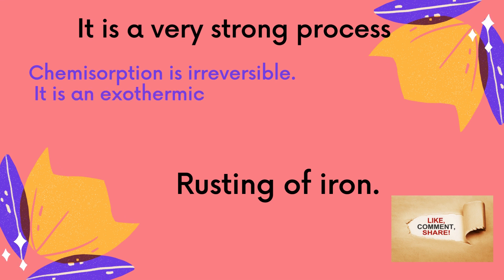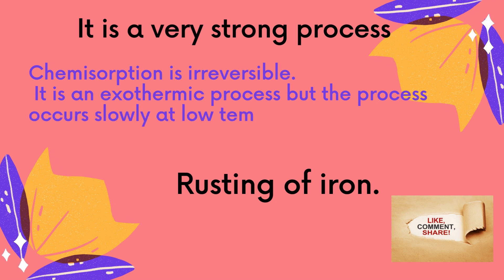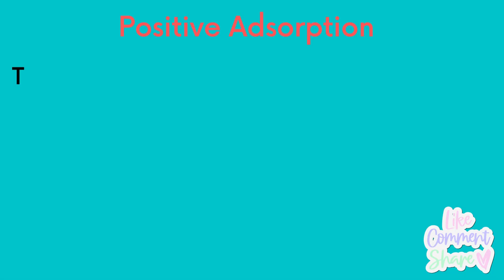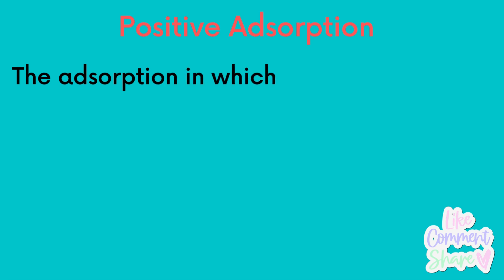Chemisorption is reversible and it is exothermic, but the process occurs slowly at low temperature and it is accompanied by increase in temperature. Rusting of iron is a typical example of chemisorption. In addition to this, adsorption of metal ions onto metal oxide at relatively higher pH involves chemisorption by formation of inner sphere complexation.